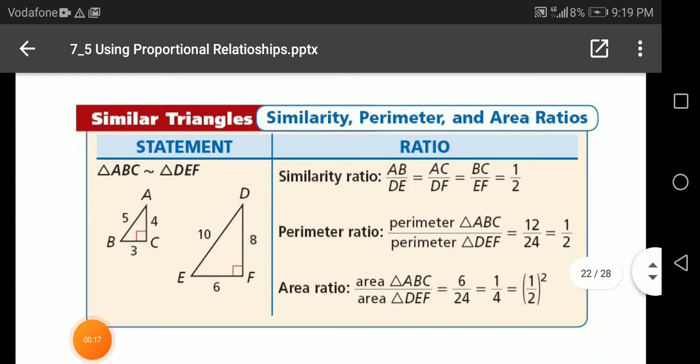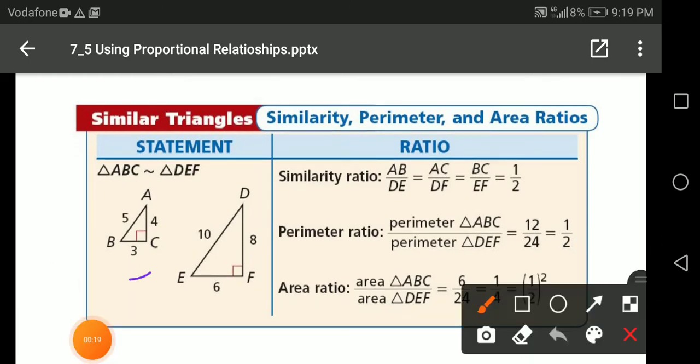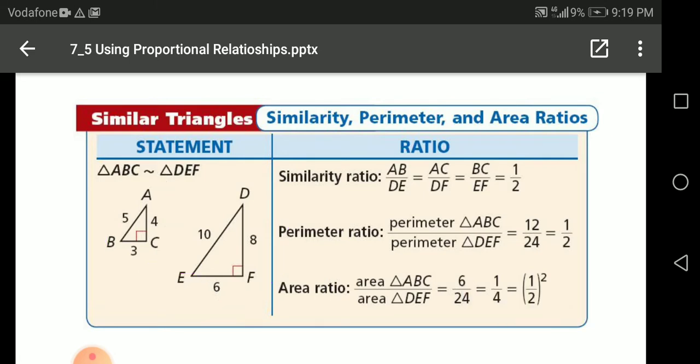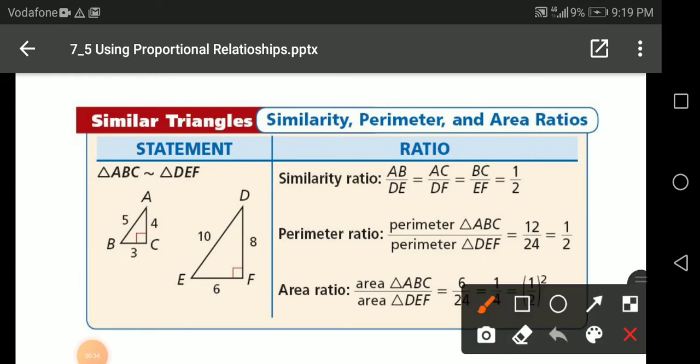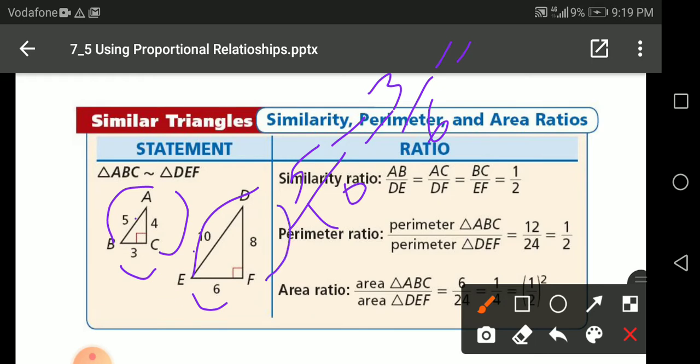It's given here two triangles are similar. Triangle ABC similar to triangle DEF. So if you have two triangles similar, remember that the ratios between the corresponding segments like AB over DE, 5 over 10, it's the same as BC over EF, 3 over 6. And it's the same as AC over DF. So it's here 4 over 8.